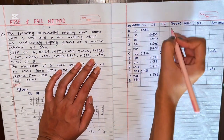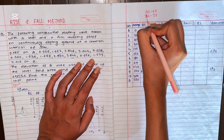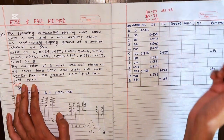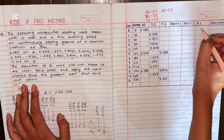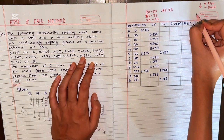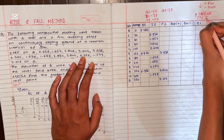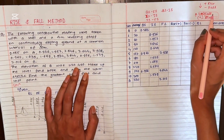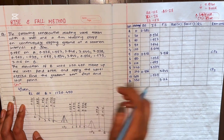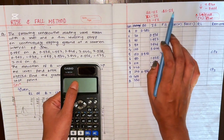For the rise and fall method, the formulas used are: backsight minus foresight, backsight minus intermediate sight, intermediate sight minus intermediate sight, and intermediate sight minus foresight. If the result is positive, it is a rise; if negative, it is a fall. Since we are going upward from A to B on a sloping ground, all results will be falls. Now we will calculate the rise and fall values.